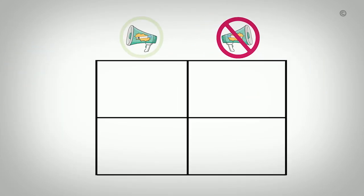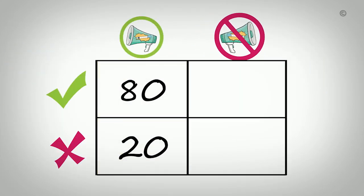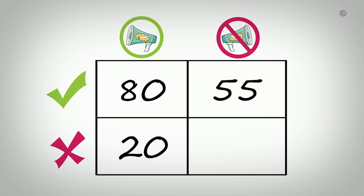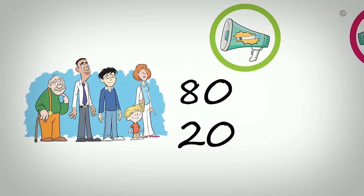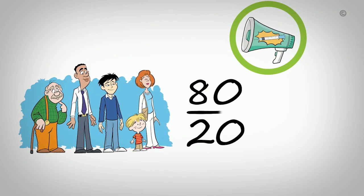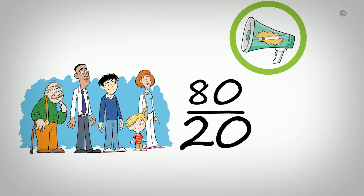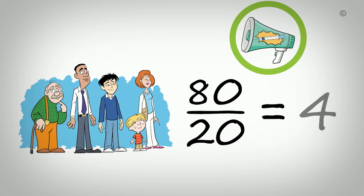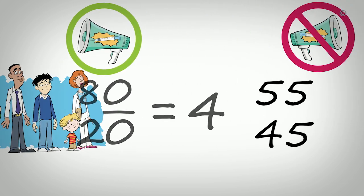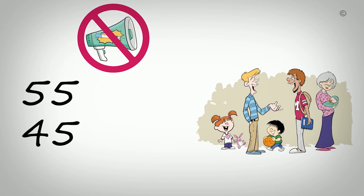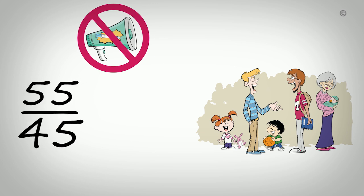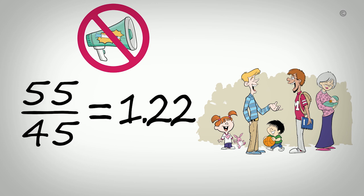Among those in the intervention group, 80 get the flu shot and 20 do not. In the control group, 55 get the shot and 45 do not. The odds of getting the flu shot in the intervention group is calculated by dividing the number of people who had the shot by the number of people who didn't. So 80 divided by 20 gives us an odds of 4. And the odds of getting the flu shot in the control group is 55 divided by 45, an odds of 1.22.